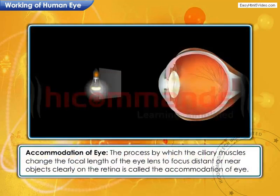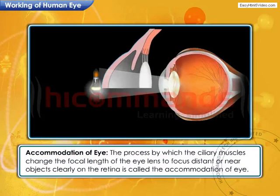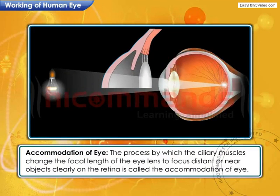The ciliary muscles change the focal length of the eye lens to focus near or distant objects clearly on the retina. This property of the eye is called accommodation.